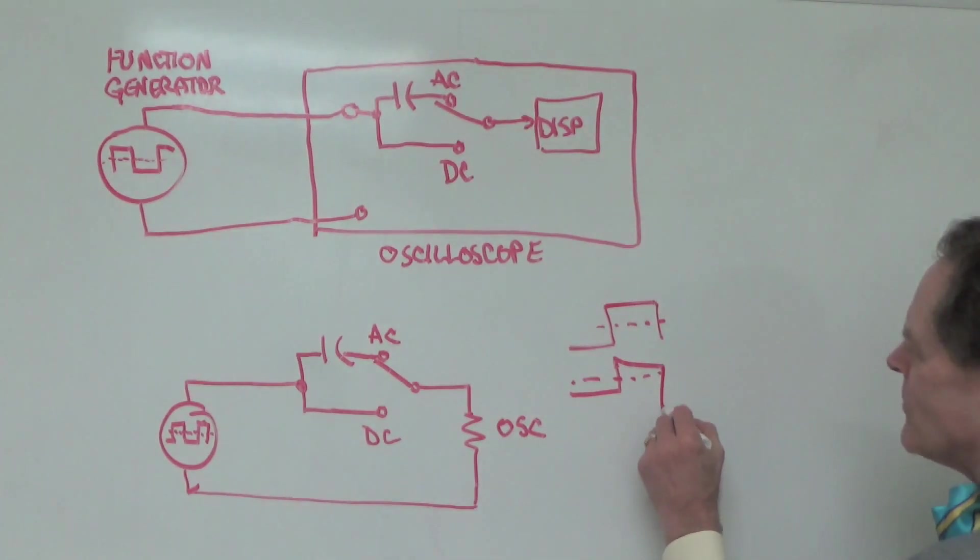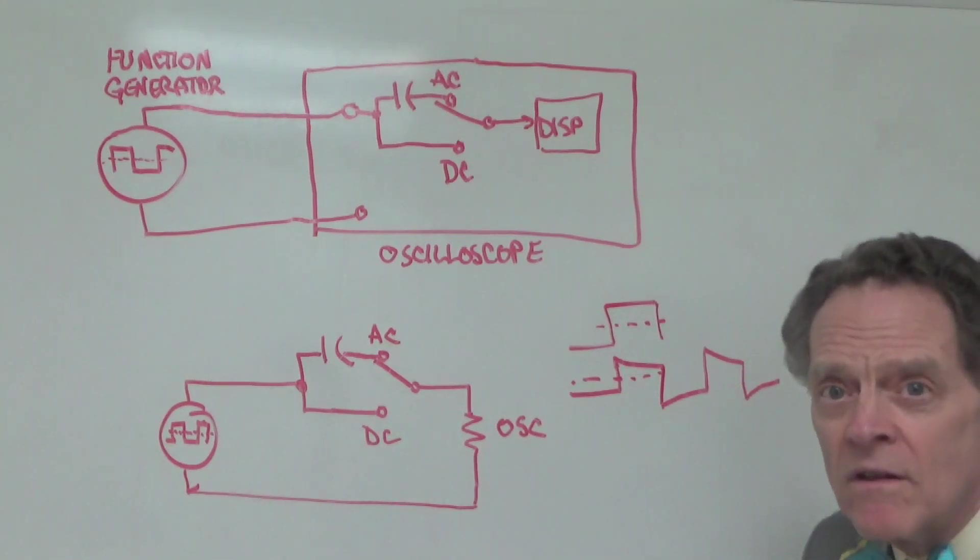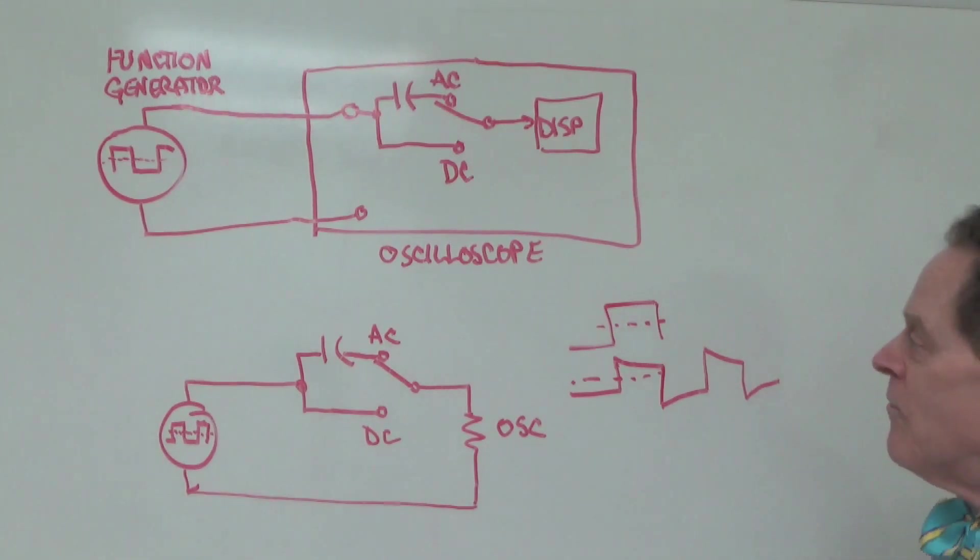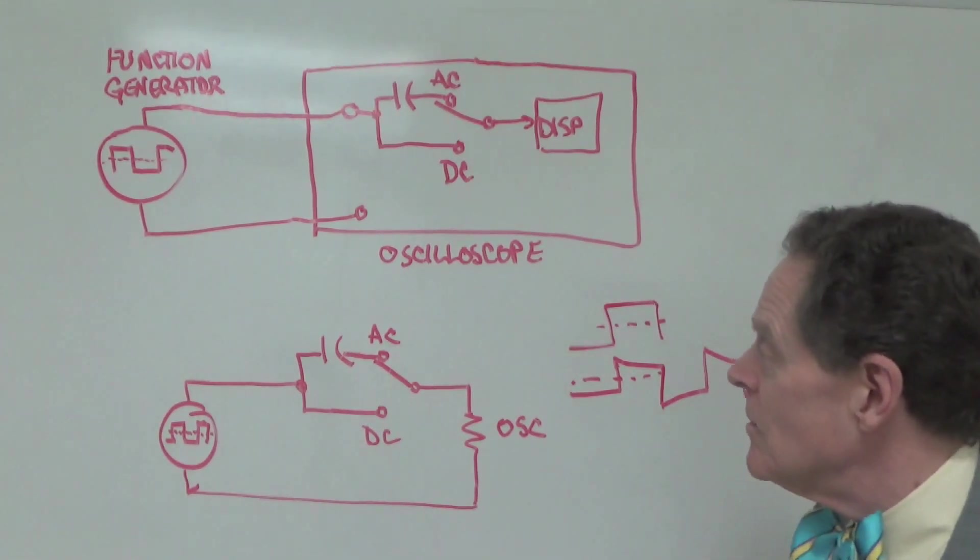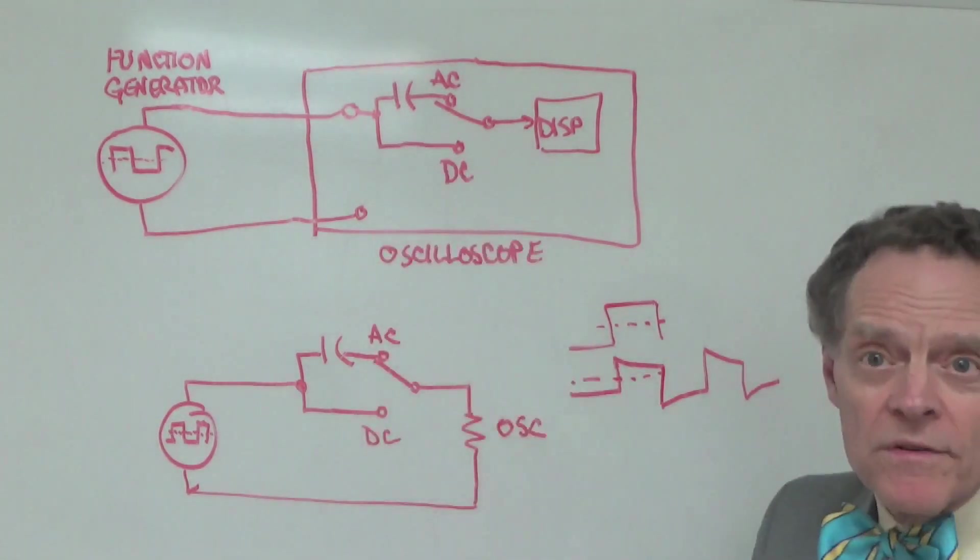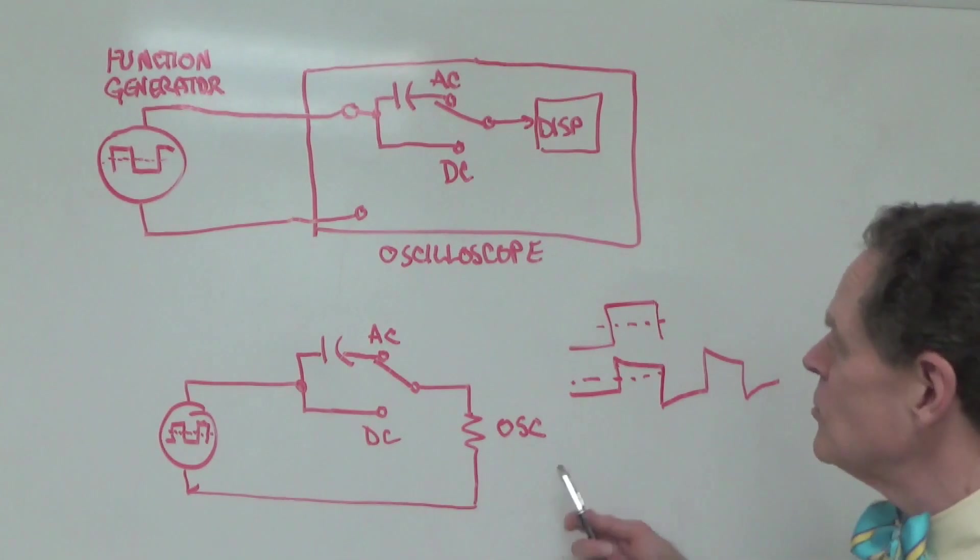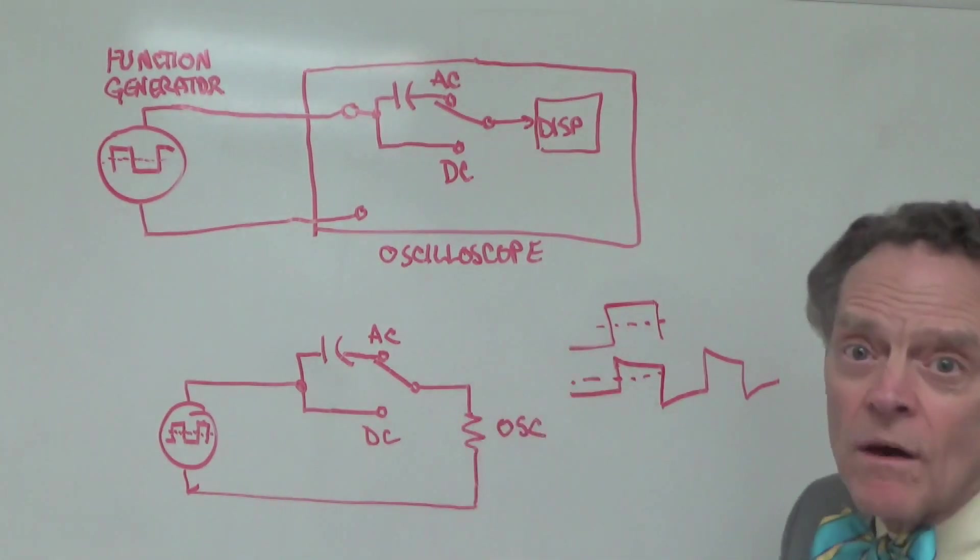And then the same thing happens. The capacitor starts to charge up in the other direction and we get something that looks like this. And so, what we end up with is a waveform that has this characteristic slant to it. And when you see that, that is a dead ringer indication for the fact that the oscilloscope is AC coupled and not DC coupled. So, you wouldn't get a good square wave until you DC coupled the scope.